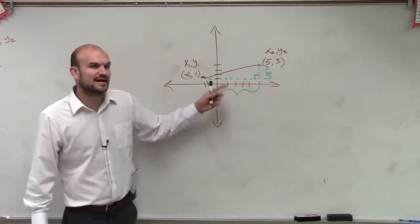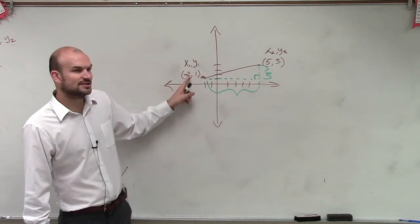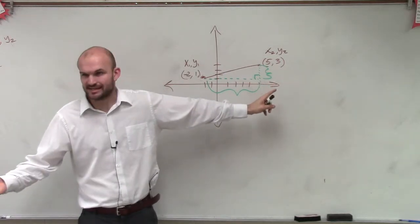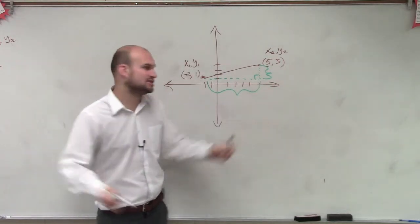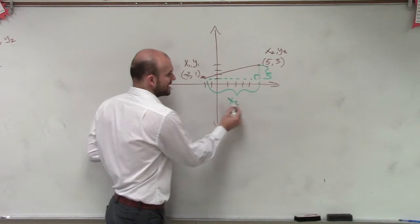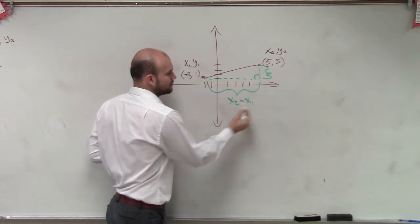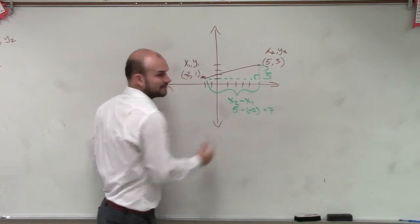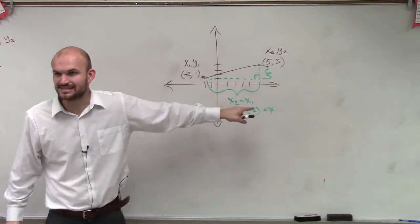So this distance, you guys got to look at it. We essentially went from negative 2 all the way to 5. You guys could just count that up and say it's 7, right? But what you're really doing is taking your x2 minus your x1, which is 5 minus negative 2, which we know equals 7. So this distance is equal to 7.